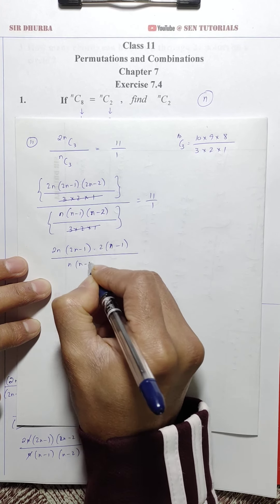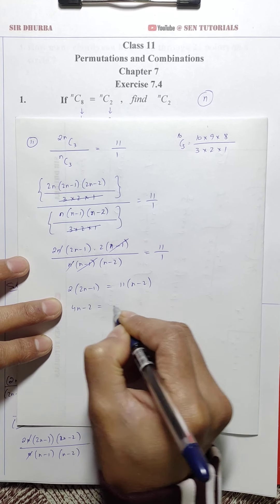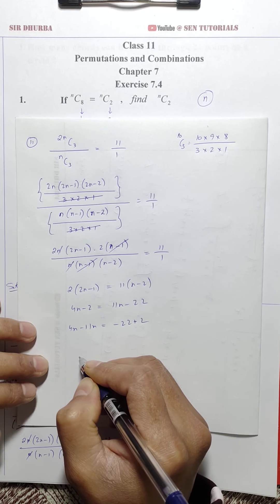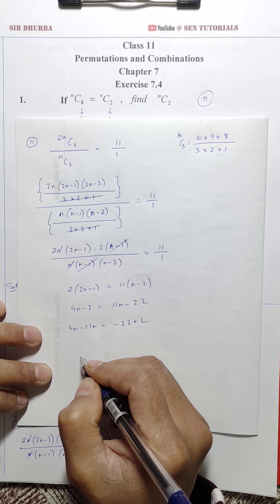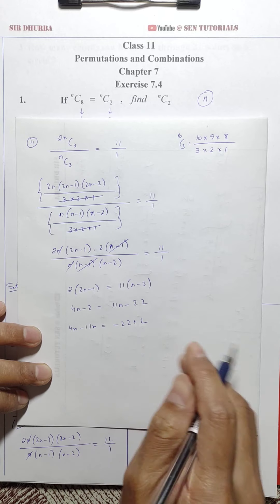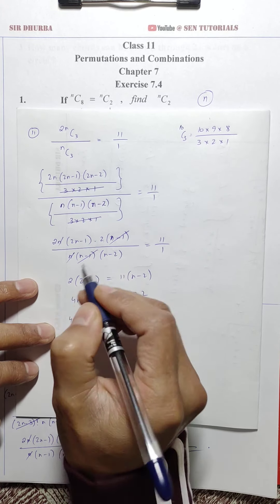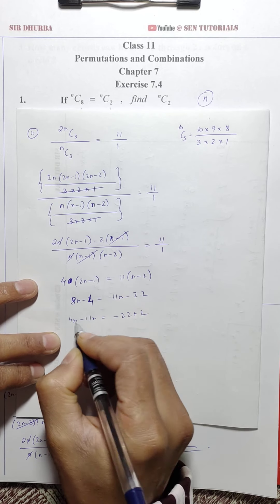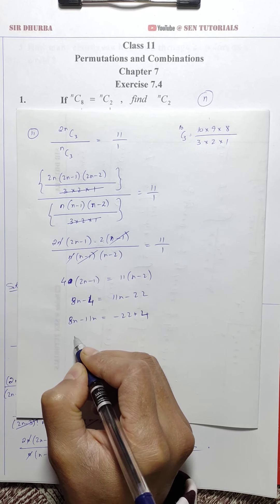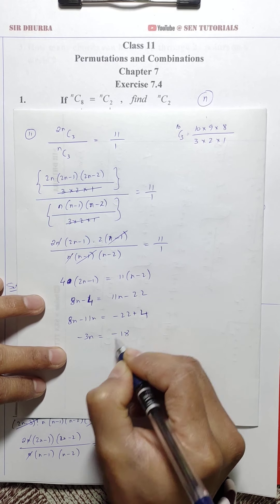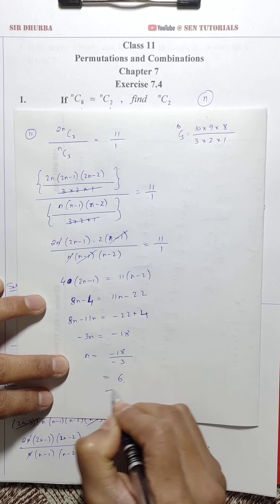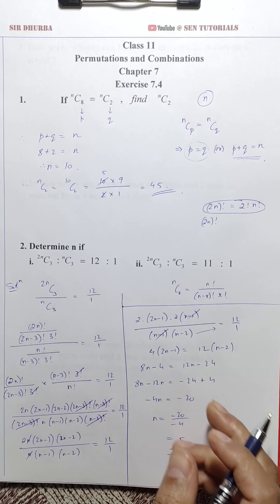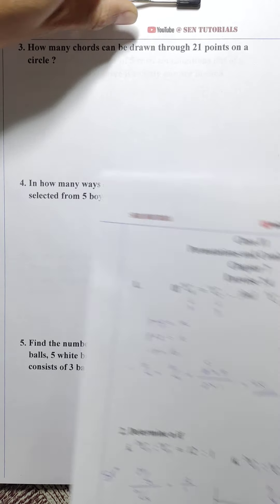After cancelling, we get 2(2n−1) × 2(n−1) / (n(n−1)(n−2)) simplifying to 4(2n−1) = 11(n−2). Expanding: 8n − 4 = 11n − 22, so 3n = 18, giving n = 6. These are the first two questions; let's move on.